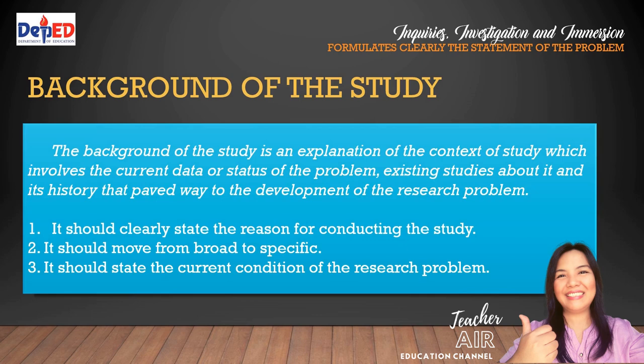The background of the study is an explanation of the context of the study, which involves the current data or status of the problem, existing studies about it, and its history that paved the way to the development of the research problem. It explicates the rationale why you as a researcher are conducting the study. Guidelines: number one, it should clearly state the reason for conducting the study; number two, it should move from broad to specific; and number three, it should state the current condition of the research problem.